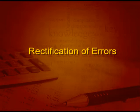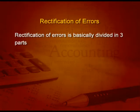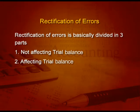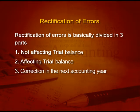The rectification of errors is basically divided into three parts. First, errors not affecting the trial balance. Second, errors affecting the trial balance. And the third one, correction in the next accounting year.